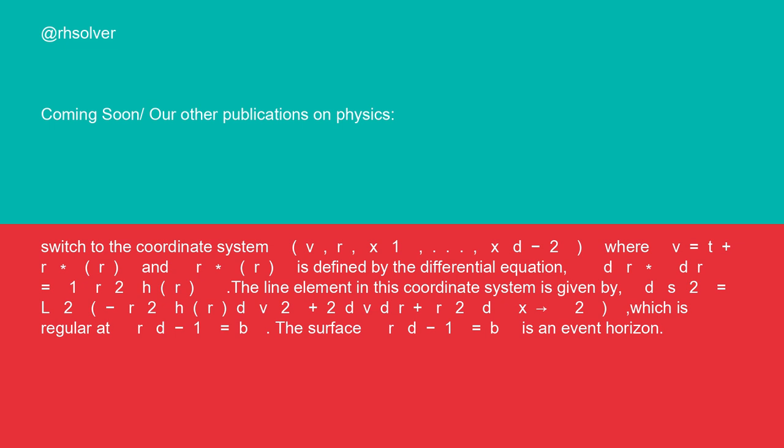The line element in this coordinate system is given by ds² = L² (-r² h(r) dv² + 2 dv dr + r² dx²) which is regular at r^{d-1} = b. The surface r^{d-1} = b is an event horizon.